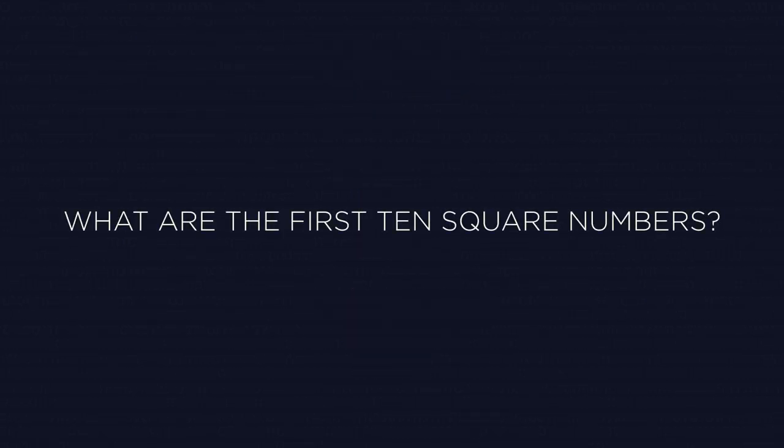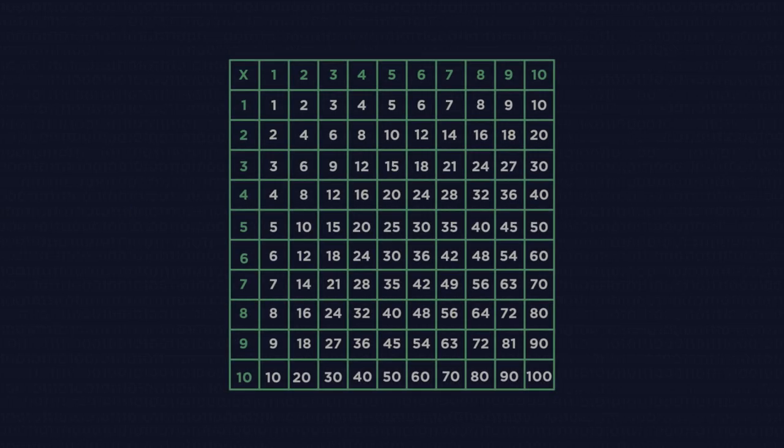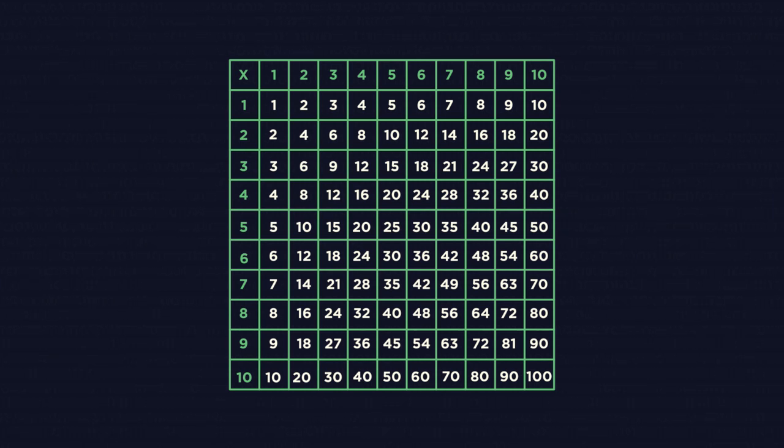See if you can list the first 10 square numbers. Pause and try now. How did you do? In a multiplication table, they are found by going diagonally from top left to bottom right.